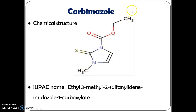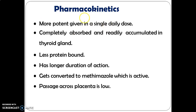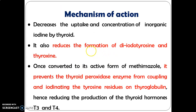Carbimazole: the chemical structure is ethyl-3-methyl-2-sulfanyl-1H-imidazole-1-carboxylate. Physicochemical properties: it is a creamy white crystalline powder, slightly soluble in water; should be stored in a well-closed container. Pharmacokinetics: it is more potent, given as a single daily dose, completely absorbed, and readily accumulates in the thyroid gland. It is less protein bound, has a longer duration of action, and is converted to the active form methimazole. It crosses the placenta to a low degree.